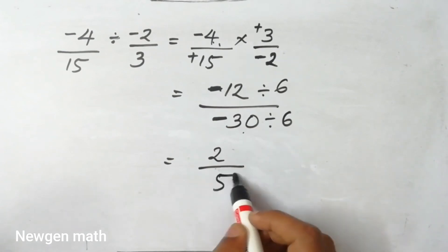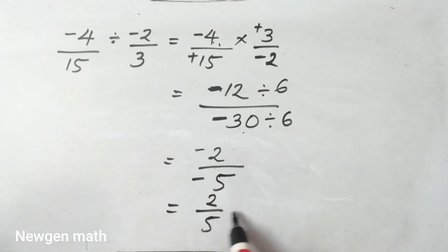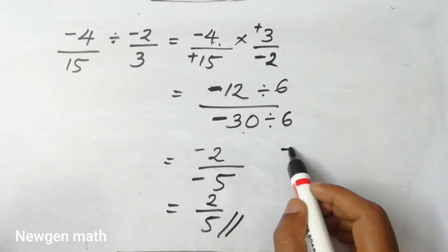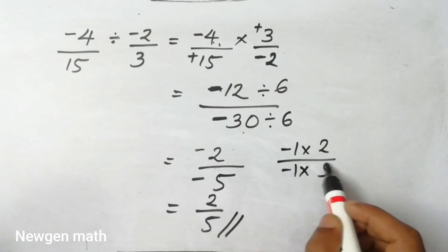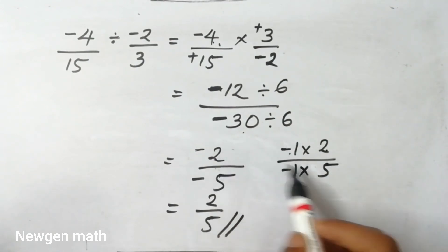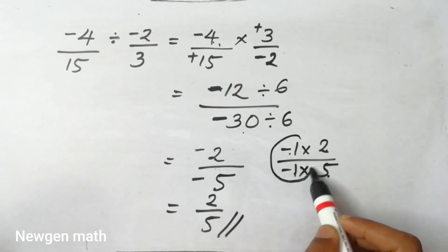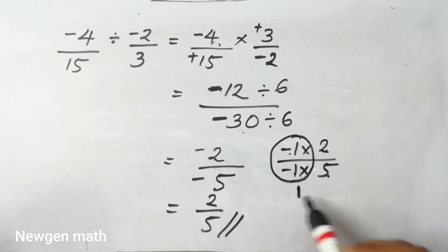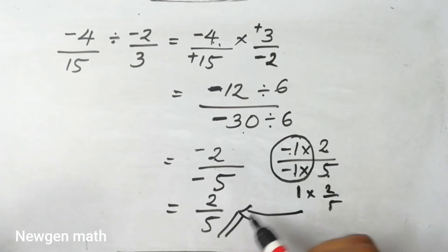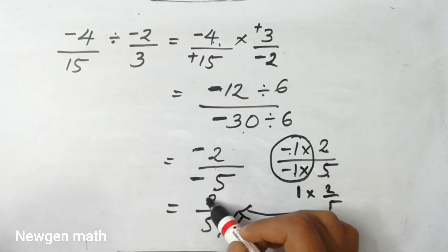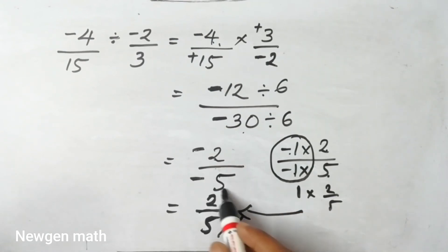I have to do this minus two. It is minus two. If you do this minus one, then you have to do this minus two. It is minus one into two. Divide by minus one into five. What is minus one into two? I mean minus two. It is minus two by five. It is minus one into two by five — minus two by five.